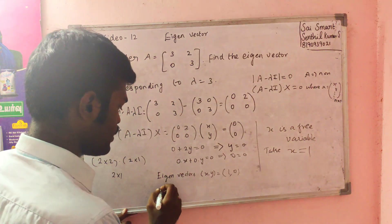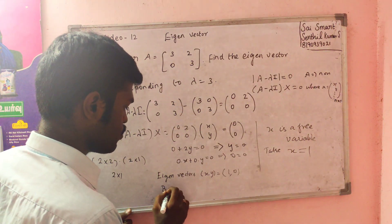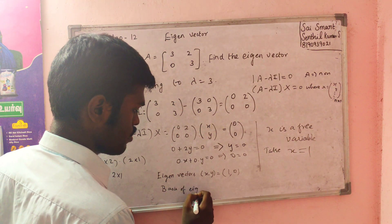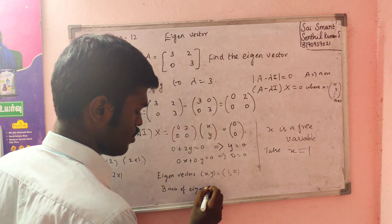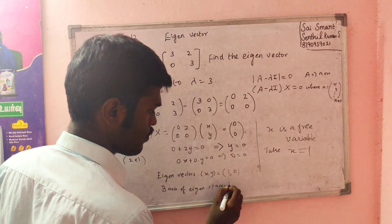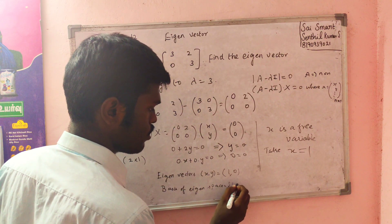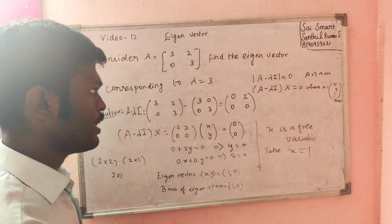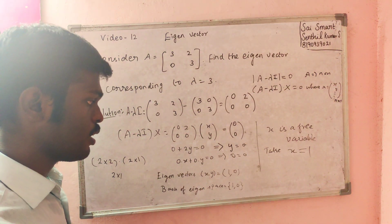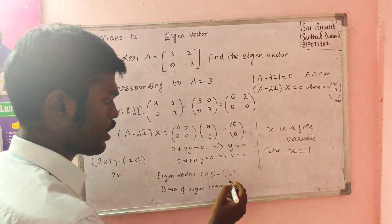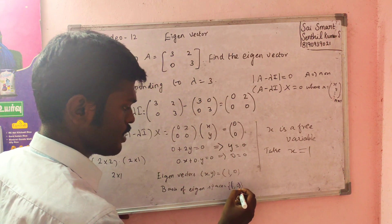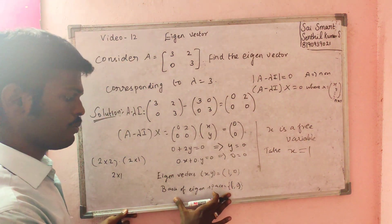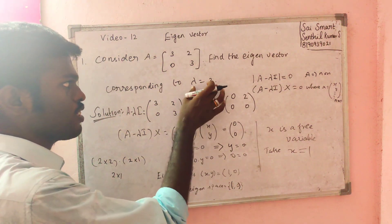So this is the eigenvector. The basis of the eigenspace for lambda equals 3 is {[1; 0]}. This gives us the complete eigen space for this eigenvalue.